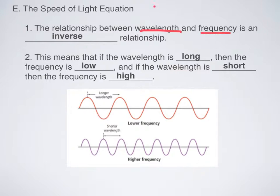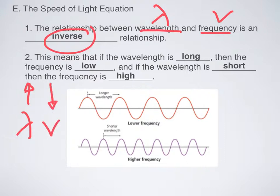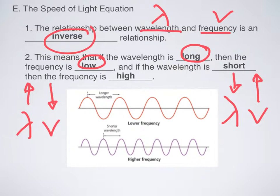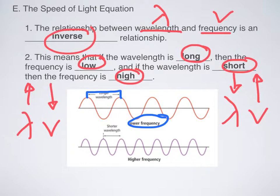Now that we've looked at what wavelength and frequency are, we have to talk about the relationship between them. It's an inverse relationship, which means that if wavelength is up, then frequency is down, and if wavelength is down, then frequency is up. So if the wavelength is long, the frequency is low; if the wavelength is short, the frequency is high — they're opposites. This picture perfectly summarizes that: a very long wavelength means very low frequency, with fewer waves passing a point per second, while a very short wavelength means higher frequency, with more waves passing per second.